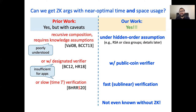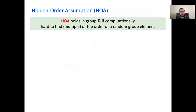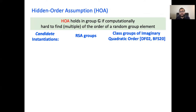Before I can state our main result more formally, let me describe the hidden order assumption. The hidden order assumption holds in a group if it's hard to find any multiple of the order of a random group element. Classical candidates for such groups are RSA groups. Class groups of imaginary quadratic order are another candidate and have received a lot of interest lately from the blockchain space.